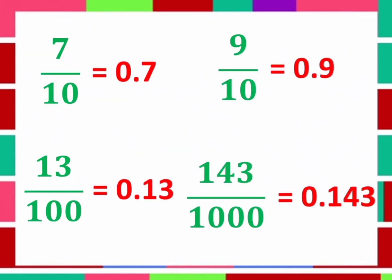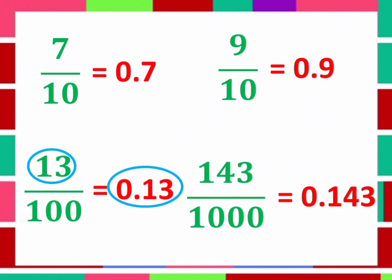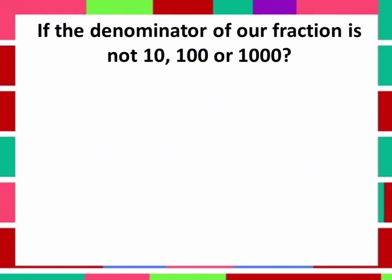So, always remember when converting fractions to decimals: if the denominator is 10, 100, or 1000, just check the numerator — it goes directly into the corresponding decimal place. For example, 7 over 10 means 7 is in the 10th place; 9 over 10 means 9 is in the 10th place; 13 over 100 means 13 is in the 100th place; and 143 over 1000 means 143 is in the 1000th place. Essentially, we just copy the numerator and place the decimal point accordingly.